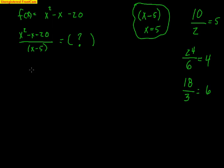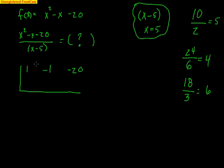We're going to use synthetic division — it's really easy and kind of fun. You make a half-box shape and write the coefficients of the original function: 1 (in front of x squared), negative 1 (in front of x), and negative 20. On the outside goes the zero of the known factor, which is 5 — not negative 5, since x minus 5 is the factor and its zero is 5. Then: drop down the 1, multiply 5 times 1 to get 5, add negative 1 plus 5 to get 4, then 5 times 4 is 20, add the columns to get 0.